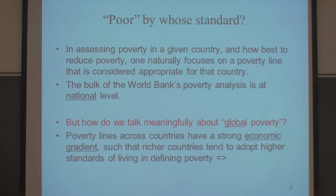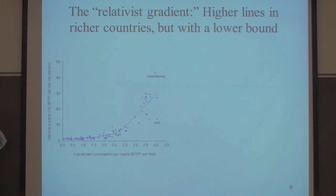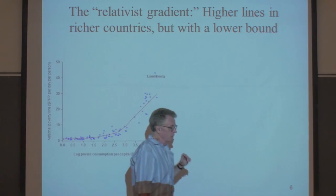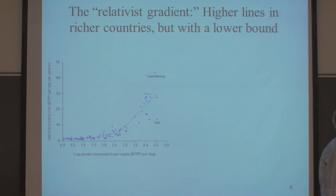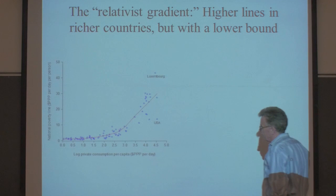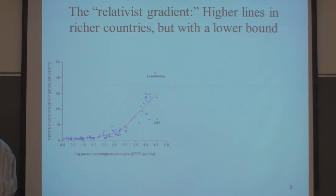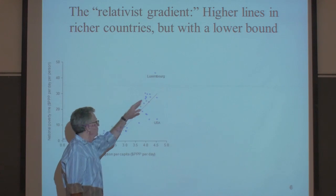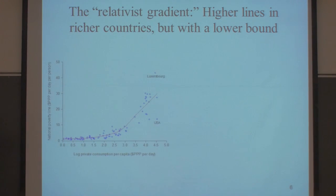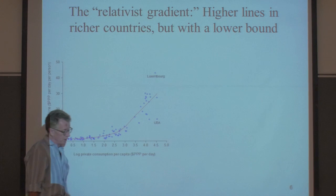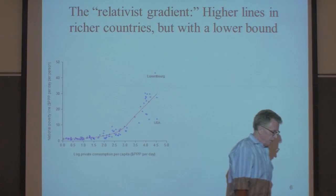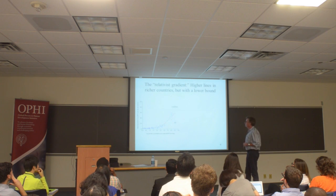How do we talk meaningfully about global poverty? Clearly poverty lines vary across countries. I've shown a picture — an update on the chart from the 1990 World Development Report — with poverty lines across countries, essentially all the poverty lines I can find, which are now pretty much national government poverty lines. On the vertical axis is the poverty line and on the horizontal axis is local private consumption per person, both in purchasing power parity.